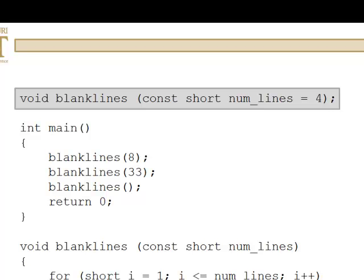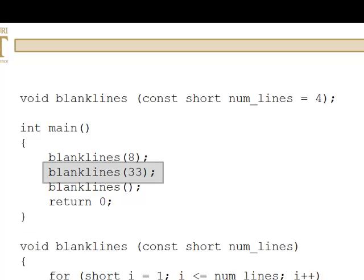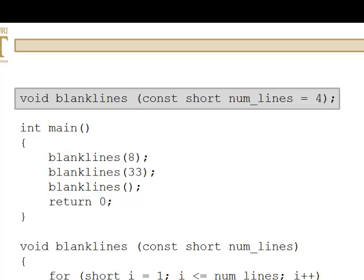Take a look at the prototype here. I have void blank lines. You remember our blank lines function? You could call blank lines this way. In main, say, where you want to output a certain number of blank lines, you pass it a value and you get that many blank lines. So, let's take a look again. Here we have void blank lines const short num lines equals four. So, here's our difference right here. What this is is a default argument.